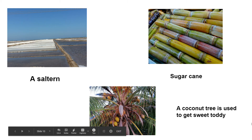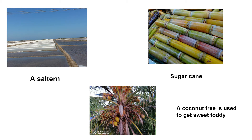The juice in sugarcane contains sugar compounds dissolved in water. Sugar is produced by removing the water from sugarcane. A sugar solution can also be extracted from coconut flower, known as sweet toddy. Treacle can be produced by removing some amount of water from sweet toddy. If water is thoroughly removed from sweet toddy, jaggery can be produced. Jaggery and treacle can also be produced from palmyra and kithul palms.